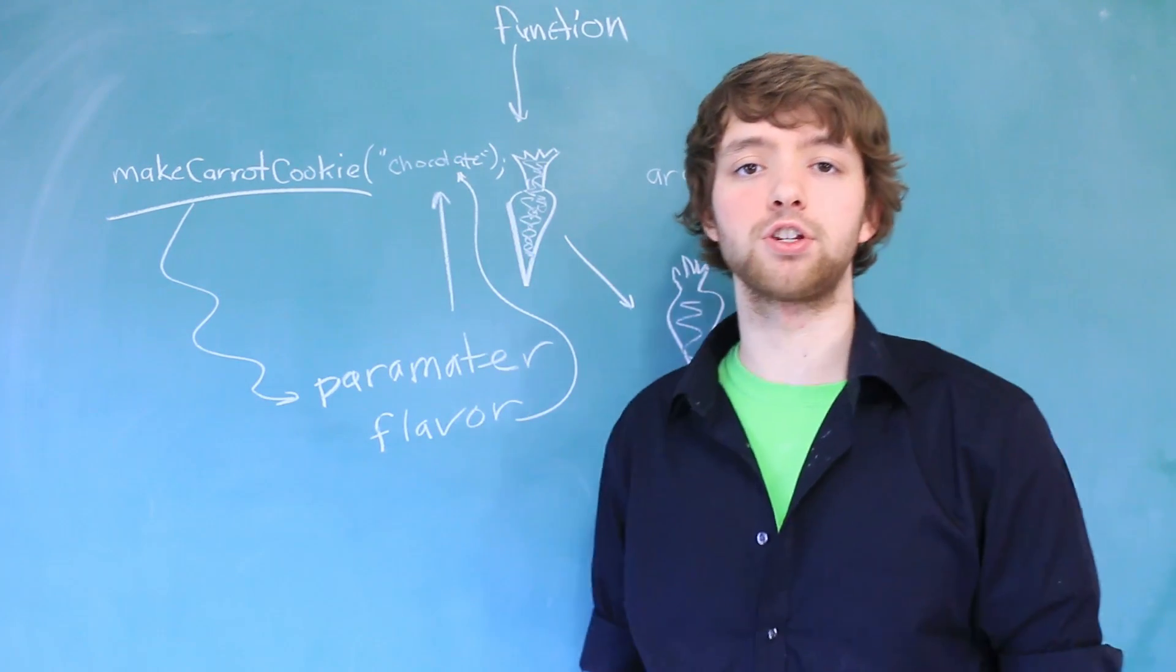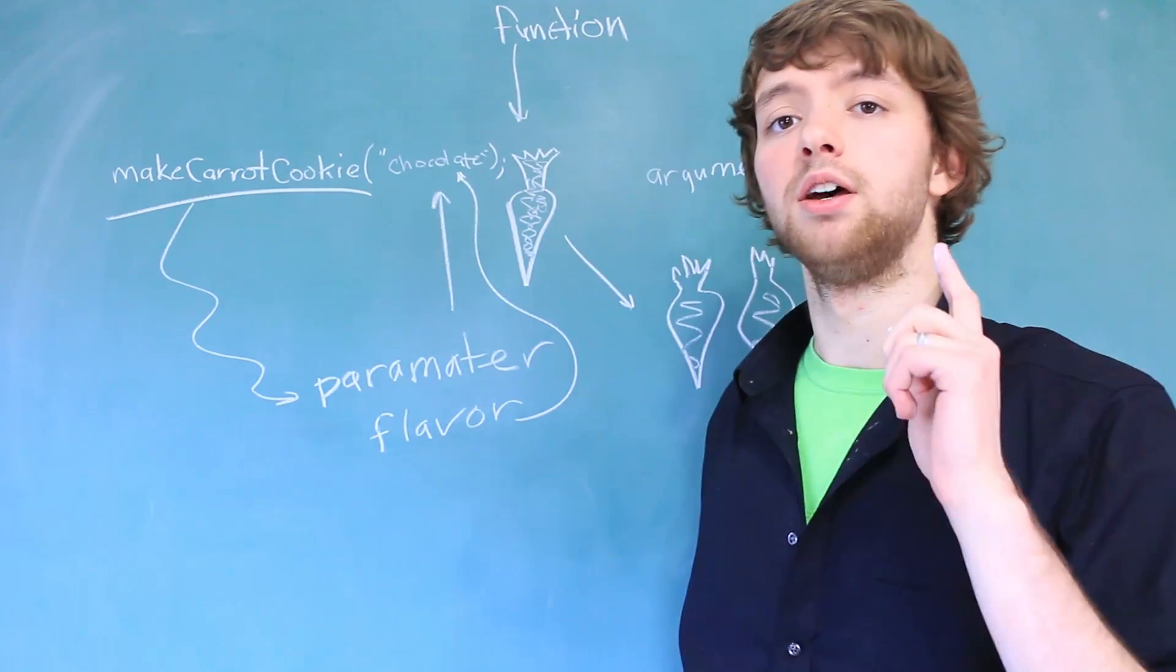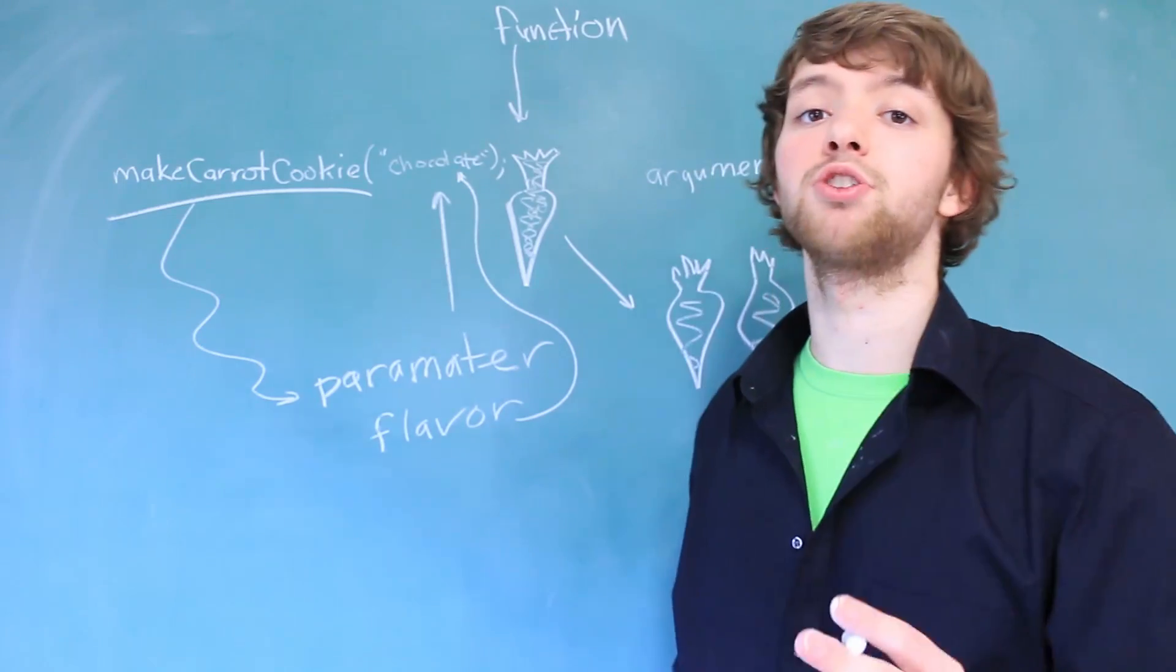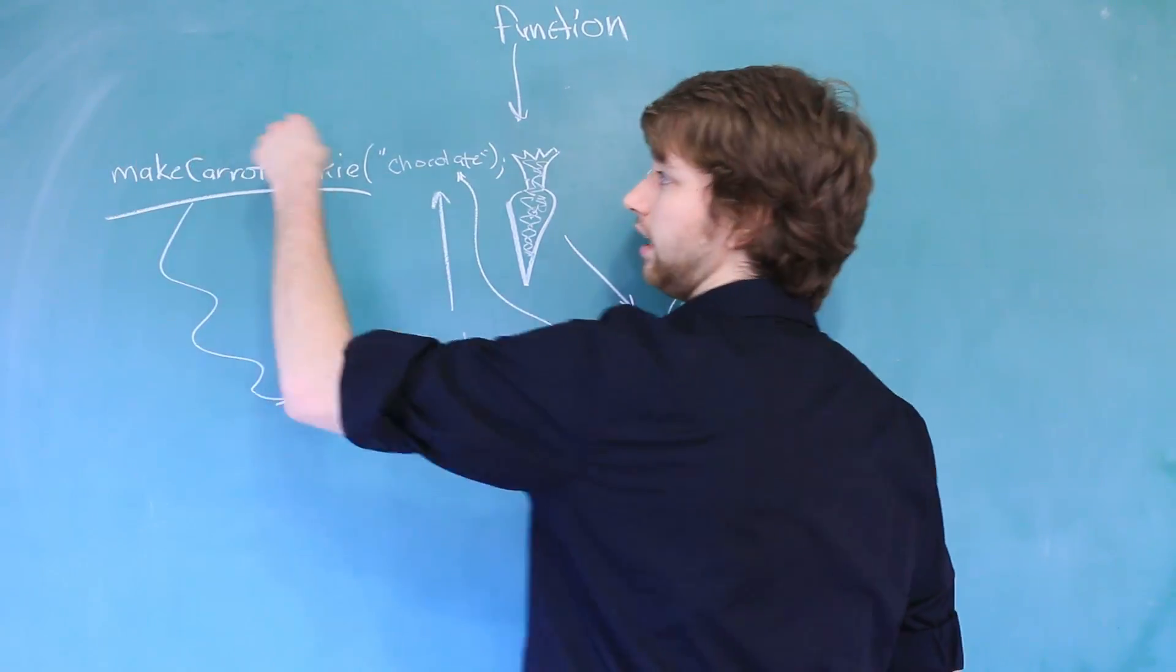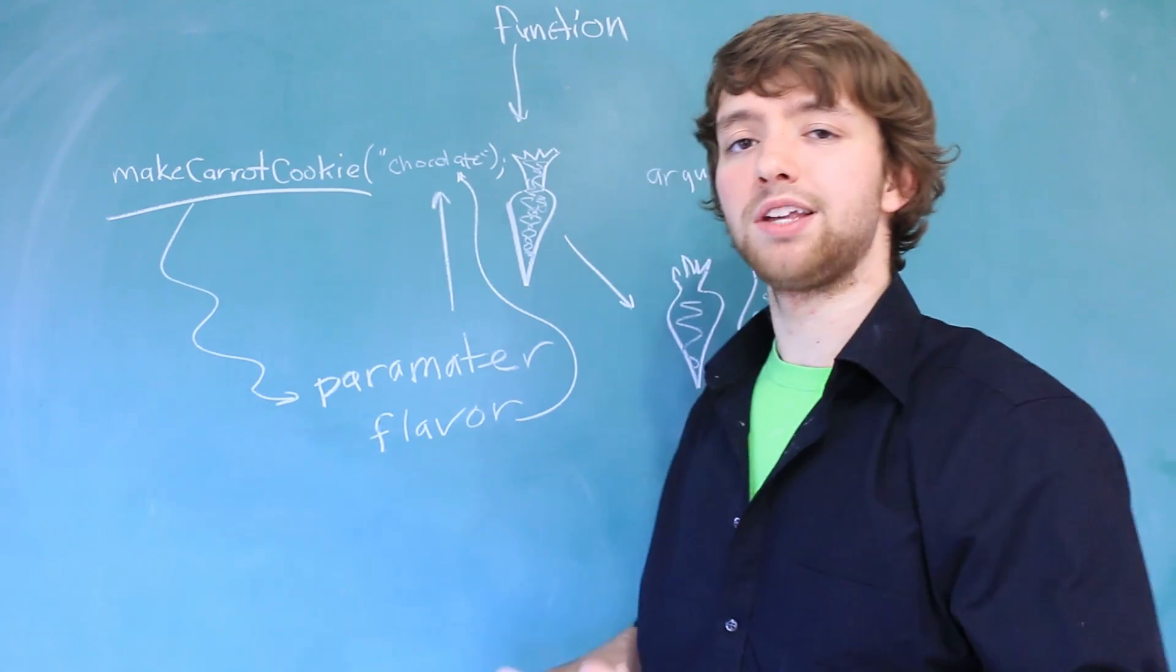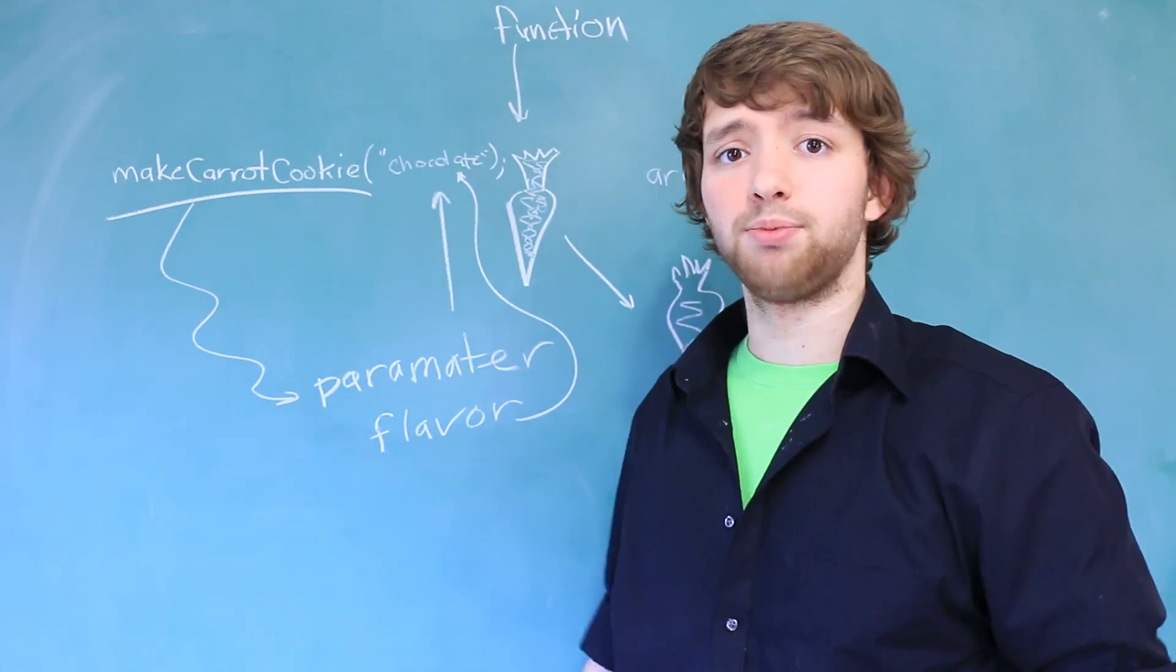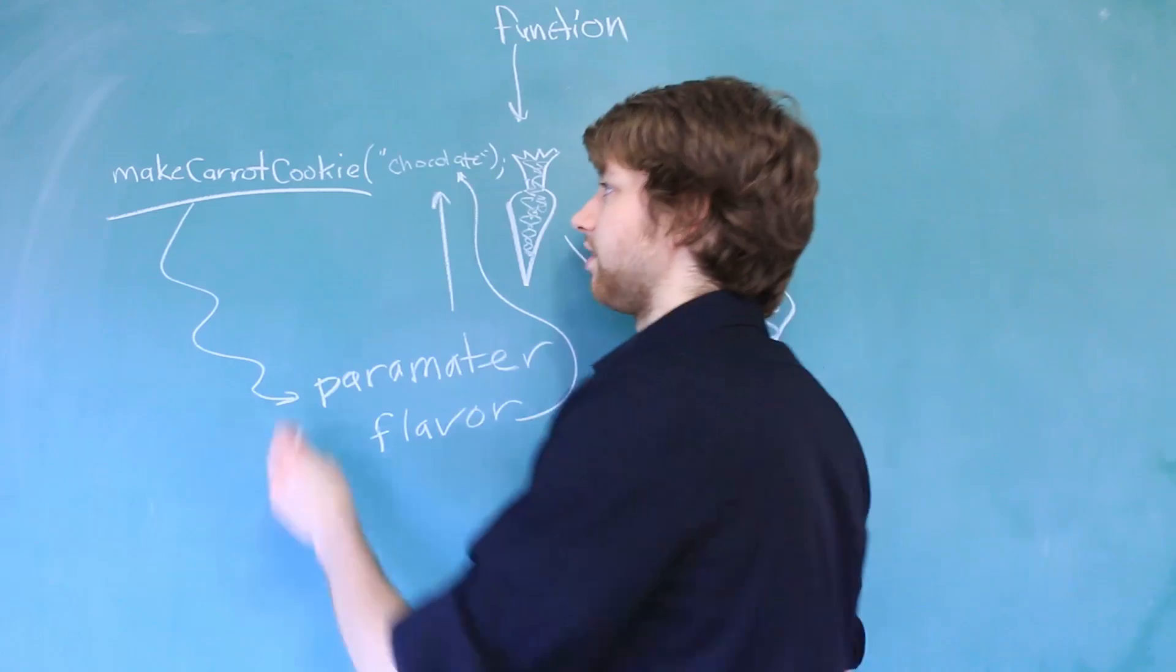That is your rundown of functions in programming. They're super helpful because one, they make it less easy to make mistakes because you don't have duplicate code everywhere. Two, it makes your code easier to read because all we have to do is say a name, make carrot cookie, super clear. And three, it makes the main section of our code much smaller. For example, if you had an app that makes cookies and sells cookies, you could just have another function in here.